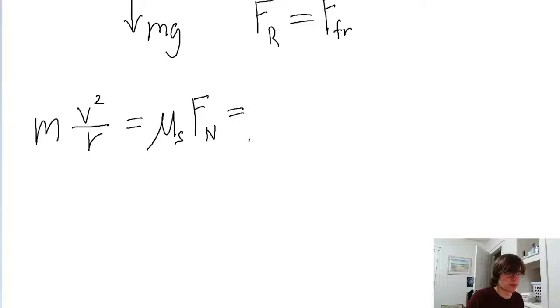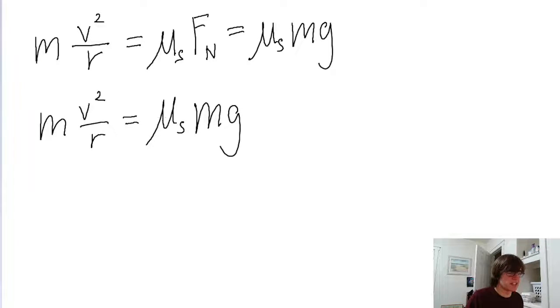And remember that normal force, in this case anyway, is equal to the weight or the mass times the gravitational acceleration. So the equation we're dealing with here is mv squared over r equals mu s mg.